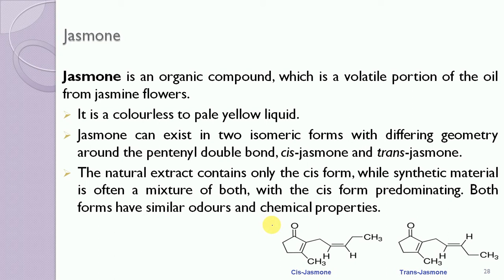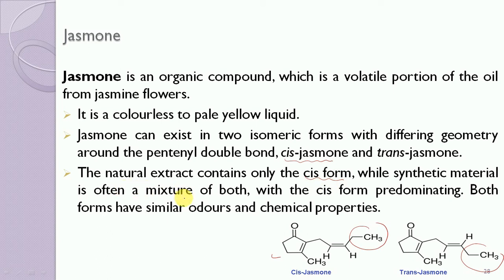It can exist in two isomeric forms. The first one, that is the cis-jasmone, has this formula in which the methyl group is on the upper side. The second one, that is the trans-jasmone, has the methyl group on the lower side. The naturally extracted jasmone can contain only the cis form; biosynthetic material has both forms in which the cis form is predominating. Both forms have similar odor and chemical properties.